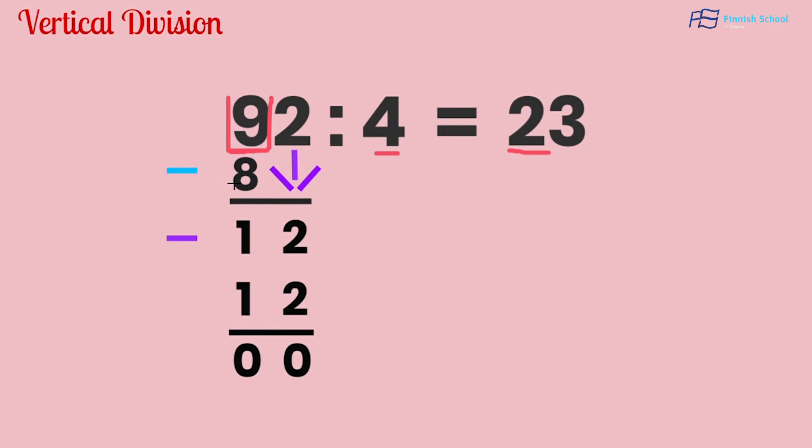9 minus 8 is 1. The second step: we put down the number 2, and we now have a new number.